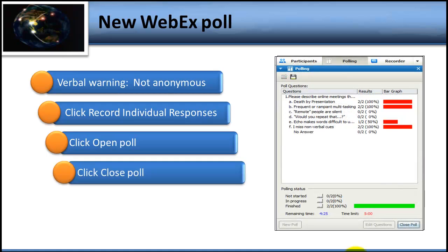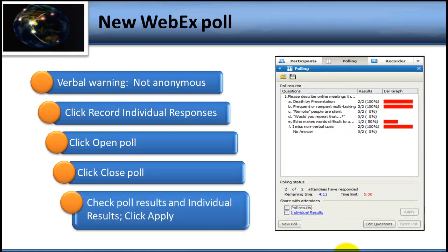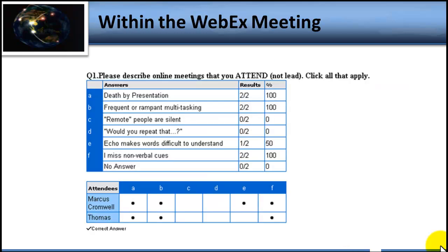When you see all the responses are in, go ahead and close the poll as we learned earlier. But before sharing results, come down to the section of the polling window that says Share with Attendees. Notice there are two items you can checkmark — you're going to check both: Poll Results and Individual Results. Checking both of these, when you click the Apply button, allows everyone to see everyone else's response within the WebEx meeting. Look at the elegant feedback that you and everyone else will be able to see in the WebEx meeting.